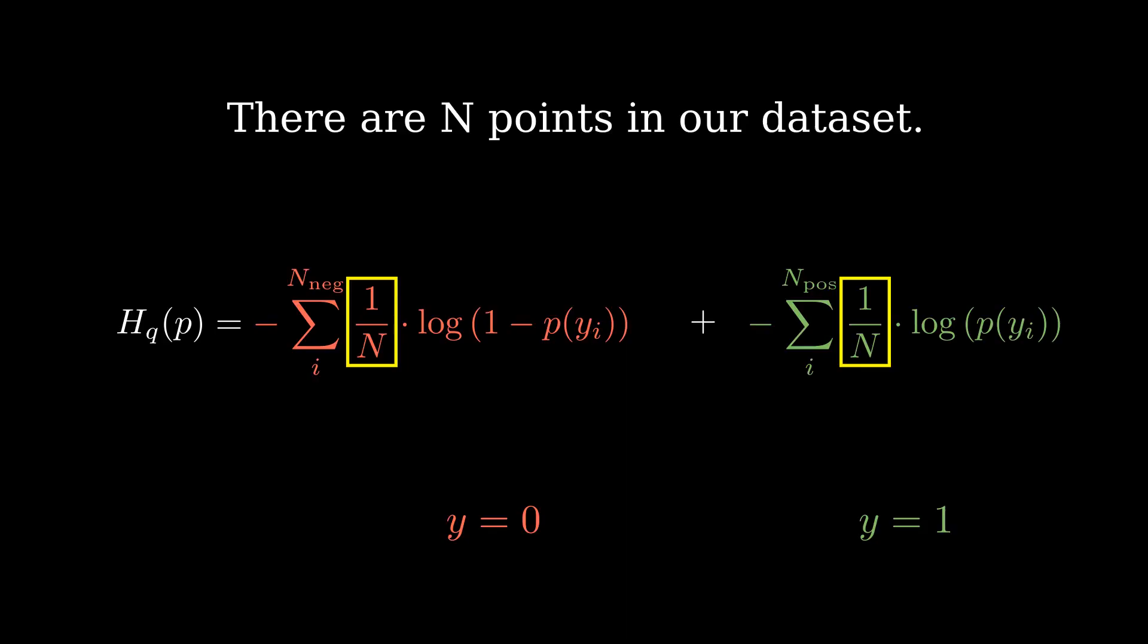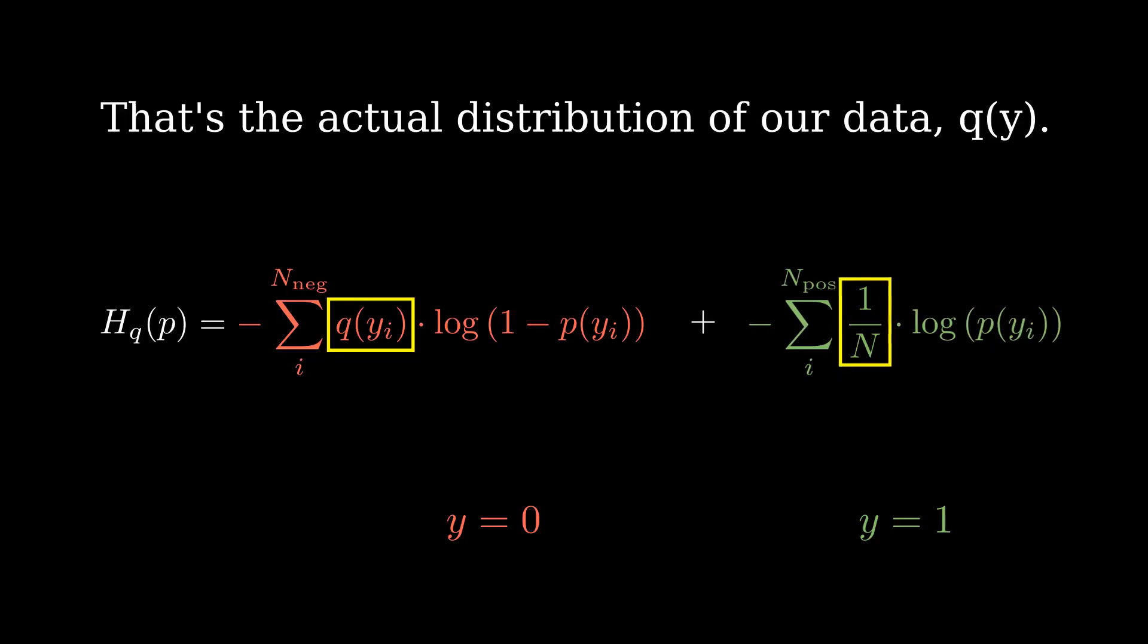There are n points in our dataset. So, 1 over n is the probability of any given point being sampled. In other words, that's the actual distribution of our data, q of y. You can think of q of y as the weight given to each point in the dataset while computing the BCE loss.